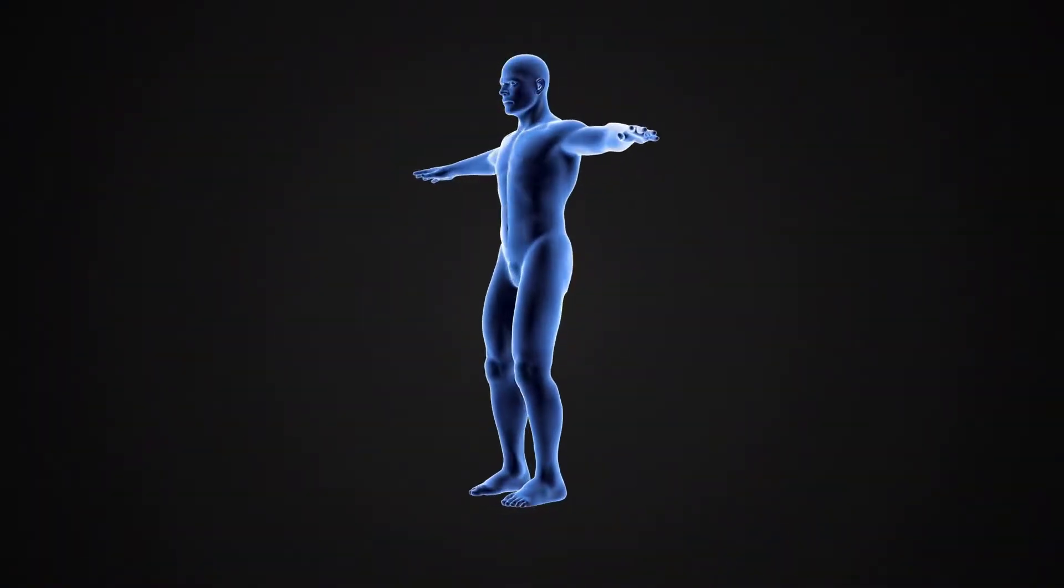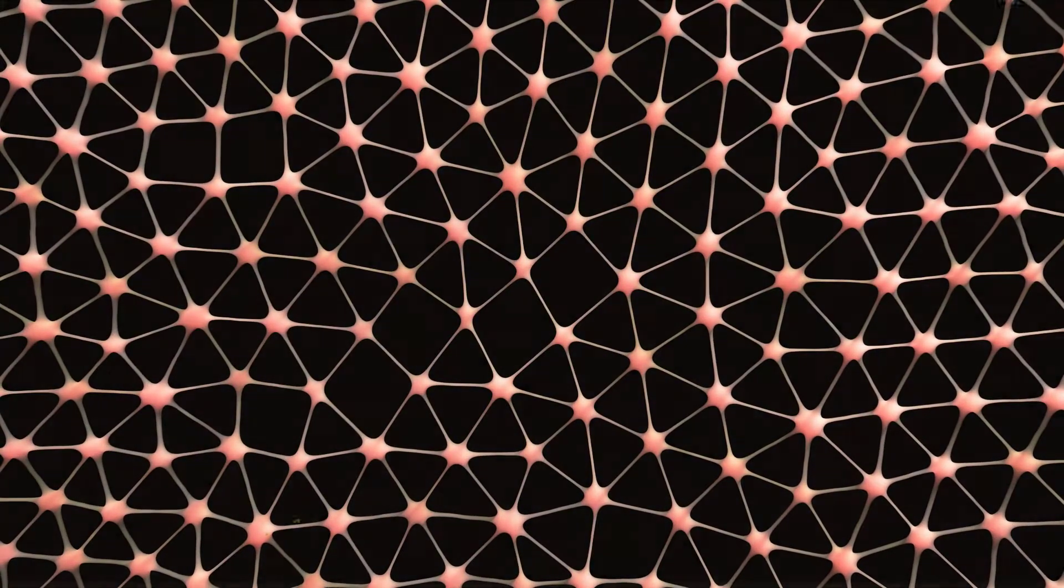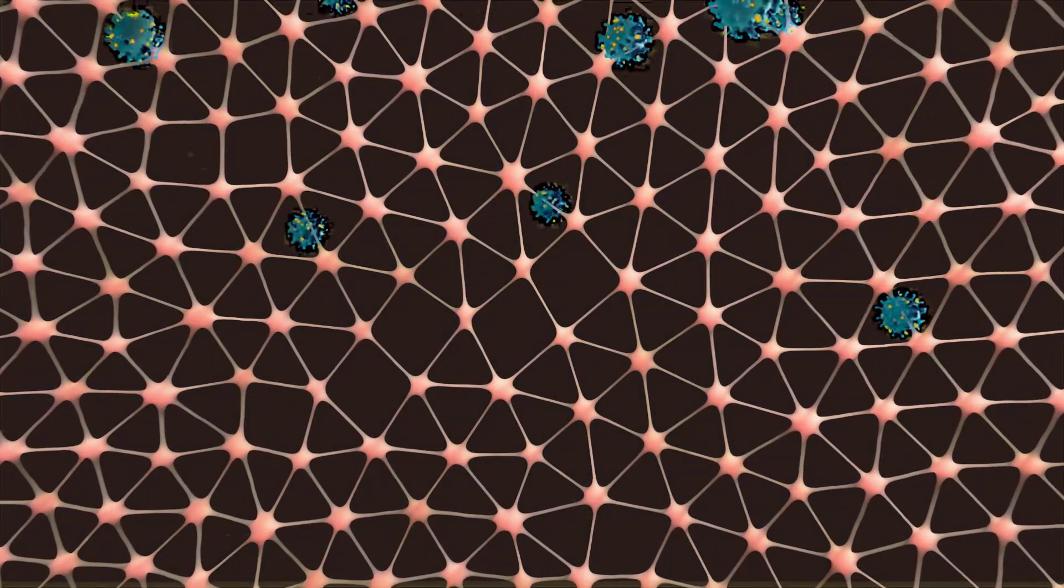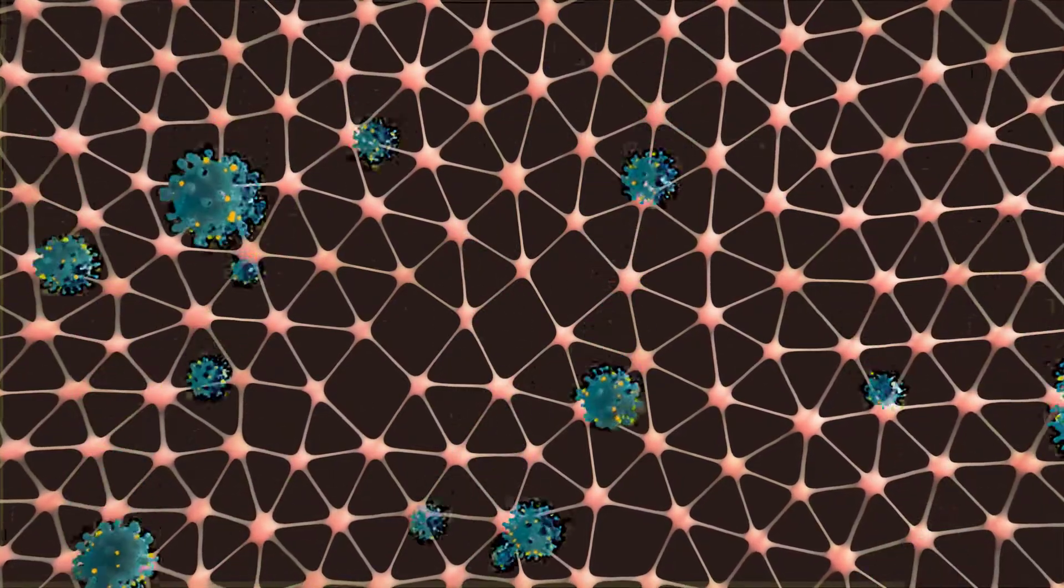The integumentary system includes the skin and its associated structures, including the hair and nails. The surface tissue of the skin is a barrier that protects the internal structures and fluids from potentially harmful microorganisms and other toxins.